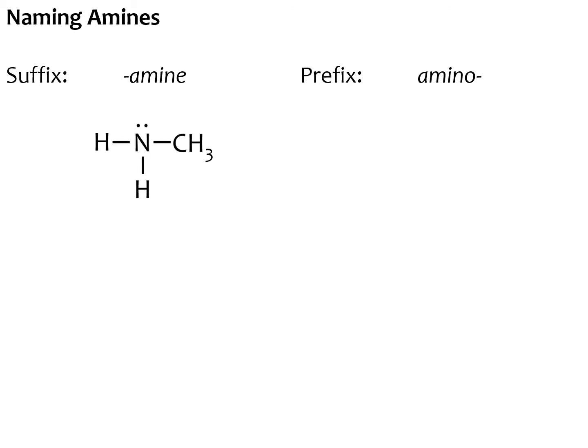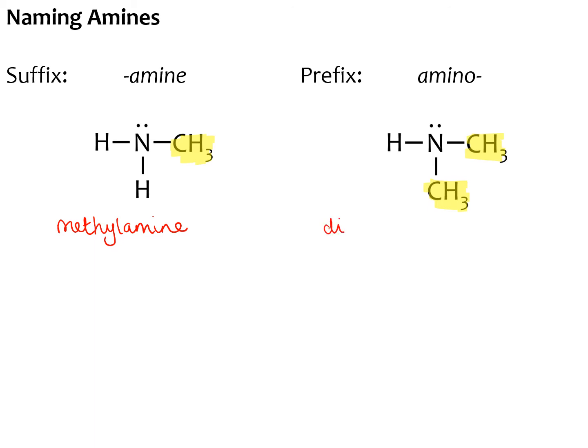The first molecule is a primary amine with a methyl group. The amine is the main functional group, so we use the amine suffix. This is called methylamine, and it is all one word. AQA specifically want you to call it methylamine. If we have a secondary amine where we have two methyl groups, we follow standard IUPAC nomenclature. Two means we use the prefix 'di', so this would be dimethylamine — 'di' showing that we have two methyl groups attached to the amine.